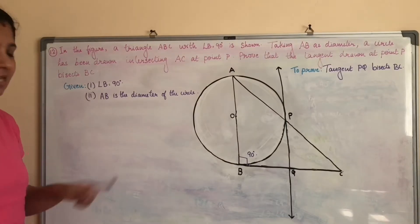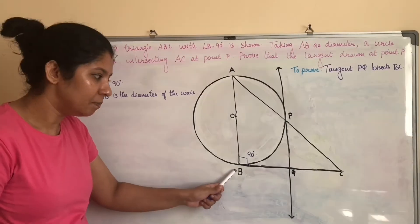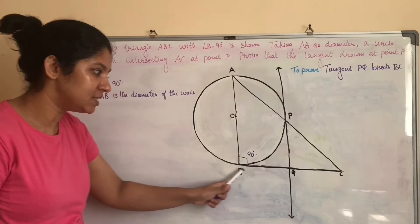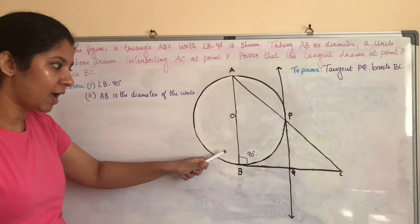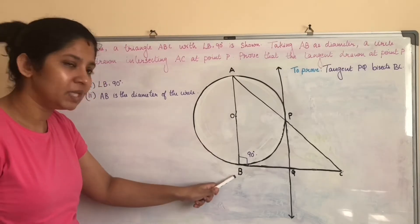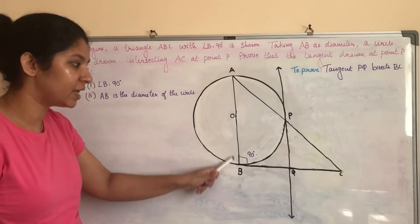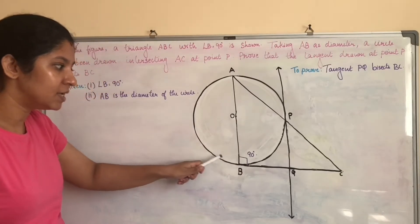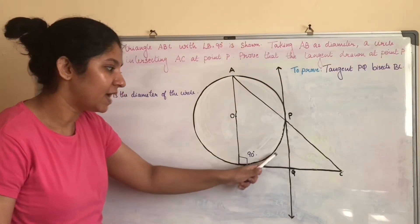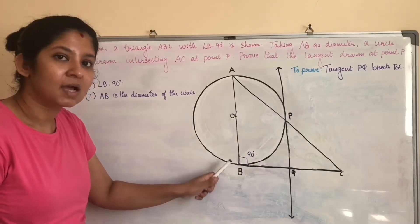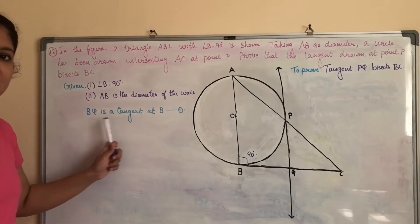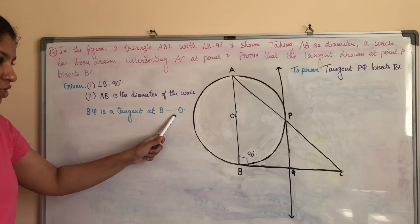Consider the first given point: angle B is equal to 90 degrees. Here, B is a point on the plane of the circle and BQ is a line segment. Since this angle equals 90 degrees, BQ is perpendicular to the radius of the circle. A line on the plane of a circle that is perpendicular to the radius is tangent to the circle. Therefore, BQ is a tangent to the circle at point B — mark this as Equation 1.